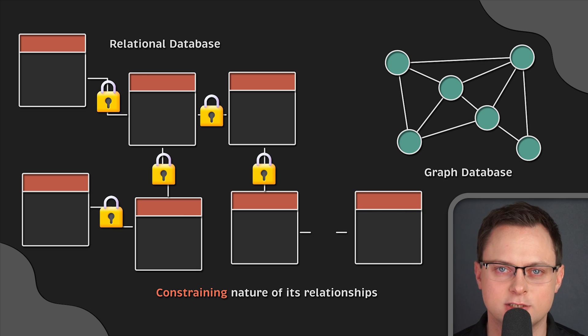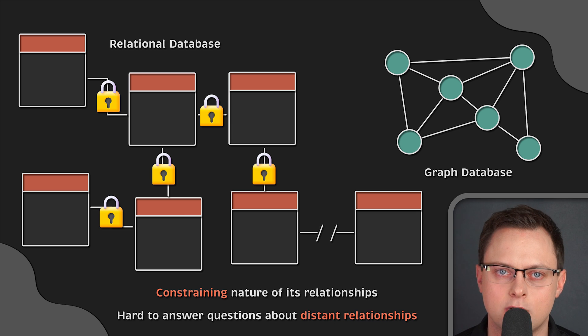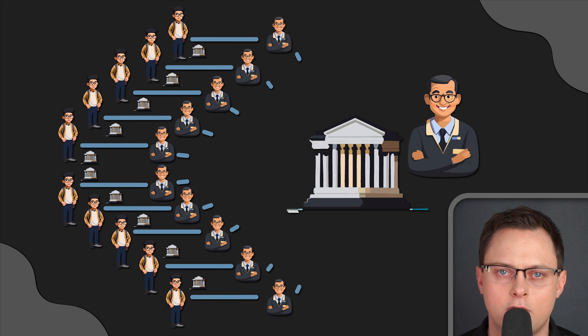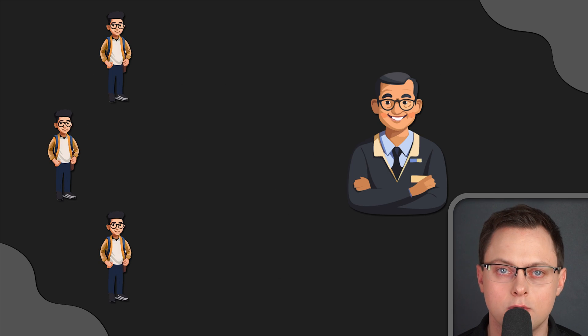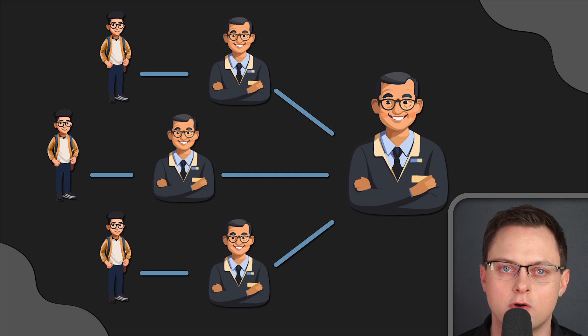However, these strict constraints often make it too complex to answer questions about distant relationships. Imagine you had all the university professor and student data ever collected, and you want to know the relationship between a group of 10 students originating from completely different universities. At first glance, you would think that since the students didn't go to the same universities they really don't have a connection. But if you look at their professors, we can discover that they all shared a common professor when they were students.